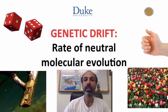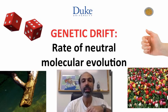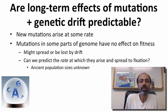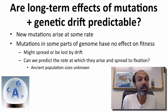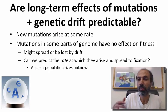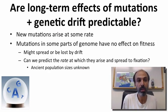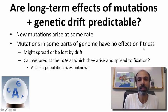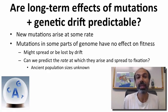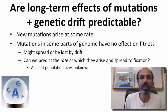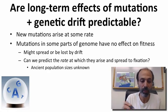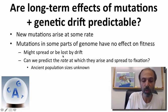What we're going to do now is look at the effects of genetic drift on the rate of neutral molecular evolution. This is something that's fundamentally important, and we'll tie in with our next set of videos on molecular evolution. Now, are the long-term effects of mutations and genetic drift predictable? We've already talked about mutations arising at some rate. Some parts of the genome will get mutations that have no effect on fitness. These mutations are referred to as neutral — they have no effect on fitness after they arise. They can spread by genetic drift, or they may be lost by genetic drift.